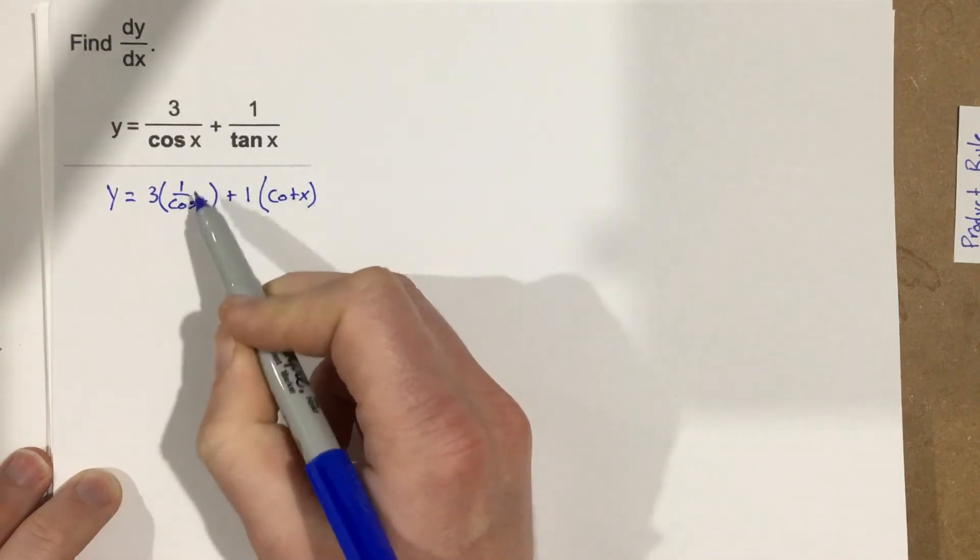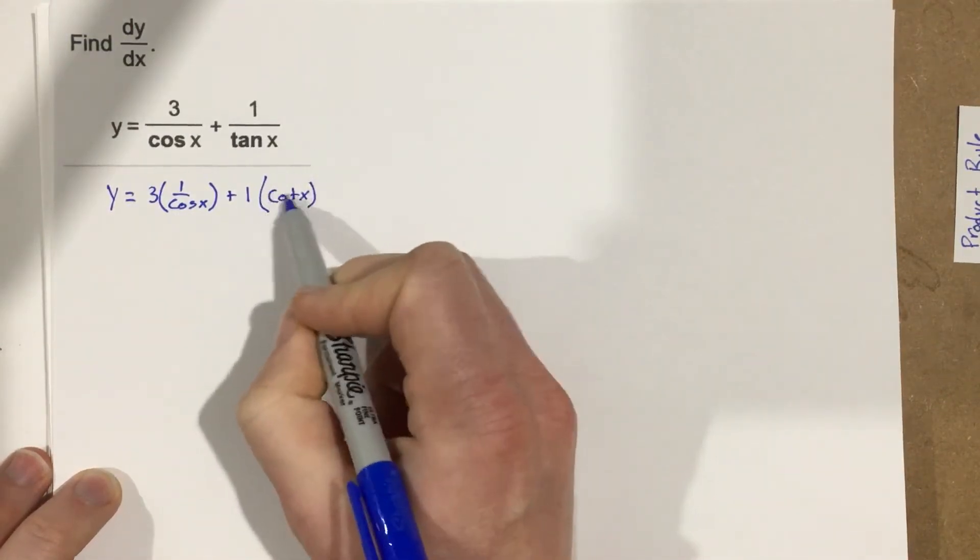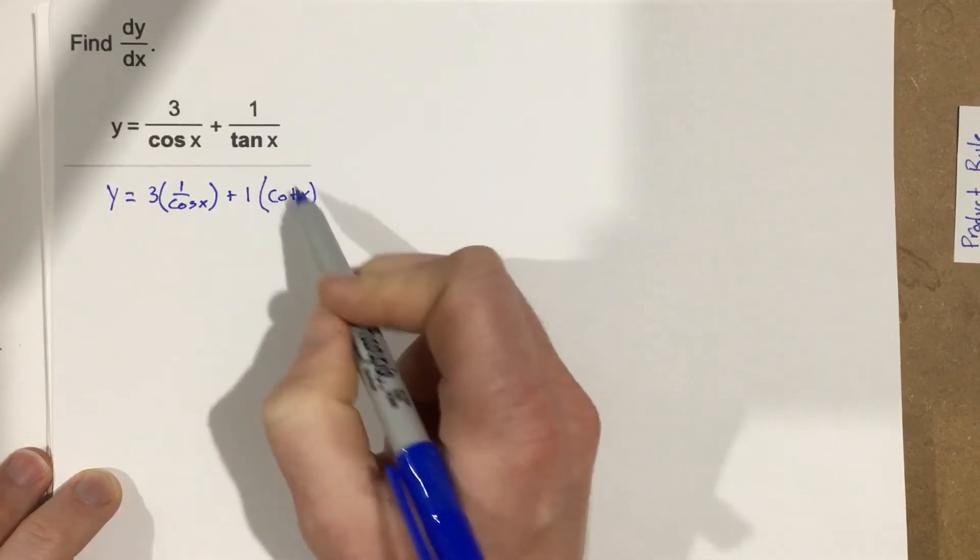So, I've rewritten these. Oh, I should have wrote 1 over tangent here. Well, 1 over tangent is cotangent x.